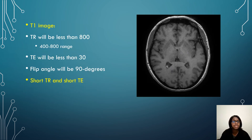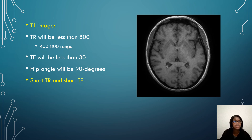For your T1 brain image, the TR will be less than 800 — a good range is anywhere between 400 and 800. The TE will be less than 30. The flip angle will be 90 degrees. It will have a short TR and a short TE.